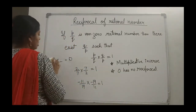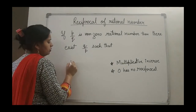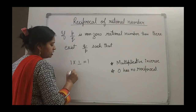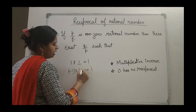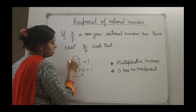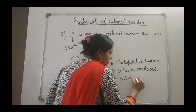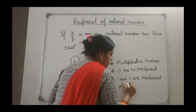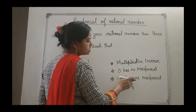One more important point: what is the reciprocal of 1? What should be multiplied in 1 to get 1? Obviously 1 only. So the reciprocal of 1 is 1. And the reciprocal of minus 1: what should be multiplied in minus 1 to get 1? Since it is negative we need one negative sign, so the reciprocal of minus 1 is minus 1. Only these two numbers — 1 and minus 1 — are reciprocals of themselves. Reciprocal of 1 is 1, and reciprocal of minus 1 is minus 1.